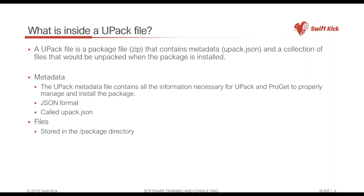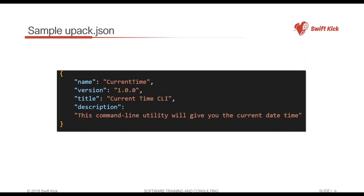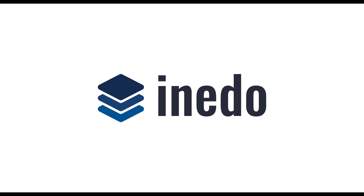That metadata is used by upack and ProGet to know how to display the data to anyone searching for it. Any files included in the upack are placed in a directory called `package`. We'll create a upack, open it in a zip editor, and I'll show you what's inside. upack enforces verification and validation of the file contents — changing anything inside alters the hash and may make it unverifiable. A sample upack.json requires a package name, version (upack uses semver with three octets), and optionally a human-readable title and description for display in ProGet.